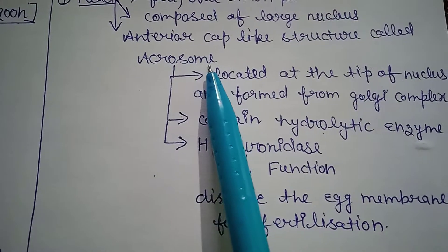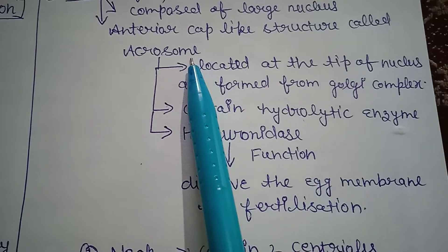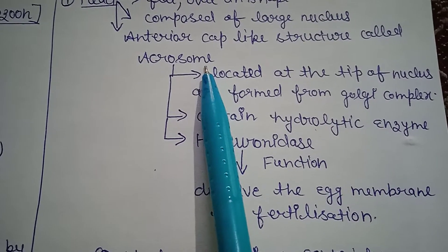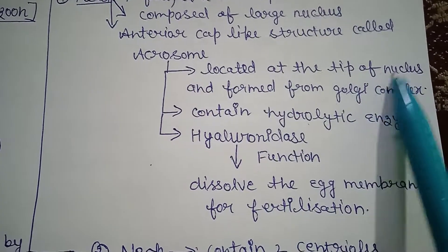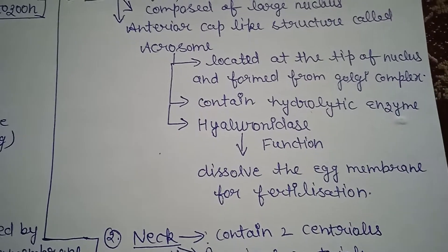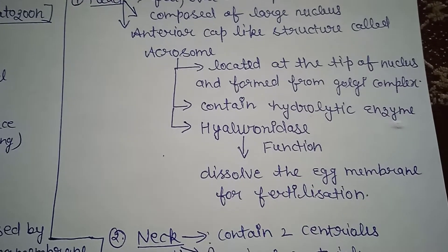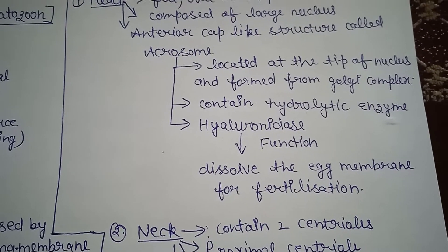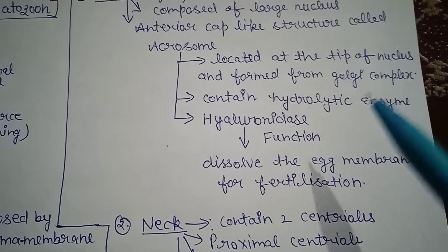If we talk about the location of acrosome, it is located at the tip of the nucleus and formed from the Golgi apparatus. Basically, acrosome contains an enzyme that is known as hyaluronidase enzyme.